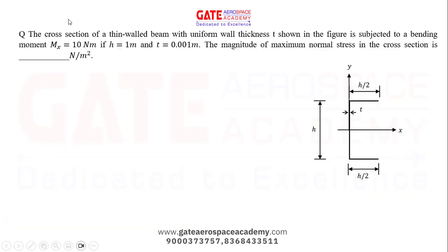The cross section of a thin-walled beam with uniform wall thickness t, shown in the figure, is subjected to a bending moment Mx equal to 10 Nm. If h is equal to 1 m and t is equal to 0.001 m, the magnitude of maximum normal stress in the cross section is in N/m².